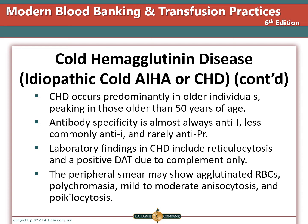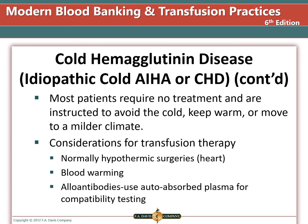Laboratory findings in cold hemagglutinin disease include reticulocytosis and a positive DAT due to complement only. The peripheral smear may show agglutinated red blood cells, polychromasia, and mild to moderate anisocytosis and poikilocytosis. Most patients require no treatment but are instructed to avoid the cold, keep warm, or move to a milder climate. When transfusion therapy is required, blood warming is recommended. To test for alloantibodies, we can auto-absorb the plasma to remove the autoantibody and then use the plasma for compatibility testing, effectively removing the cold antibody to find other alloantibodies.